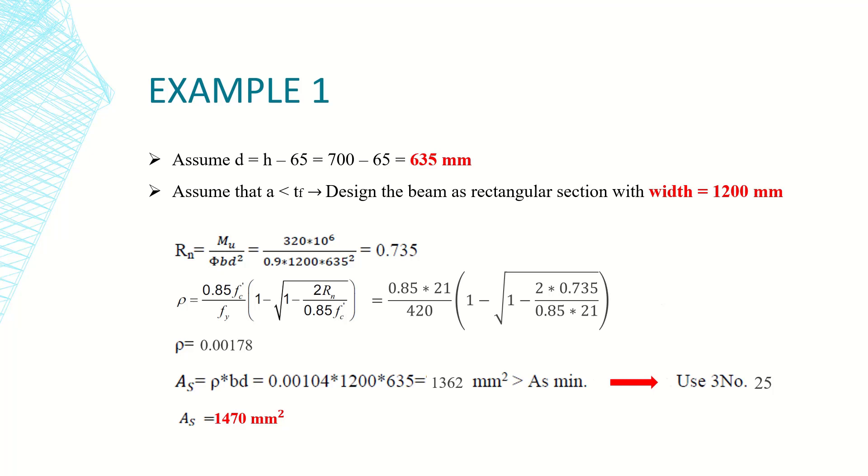The answer will be 1362 millimeters squared. We will check As minimum in a later step but it will be greater than As minimum, so we will use 3 number 25 millimeters. So the actual As will be 1470 millimeters squared.